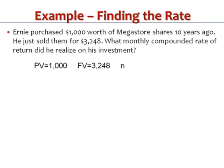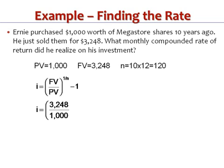Here are the base numbers from the question. He started with $1,000 — that's what he paid for the shares, so that was the present value. They grew to $3,248, so that's the future value. And how many periods did he have? We're compounding monthly, so 10 years would be 120 months. There's the formula again, and if I plug in the numbers: $3,248 over 1,000 to the power of 1 over 120. Putting brackets around the 1 over 120 in your calculator will help you get this straight.